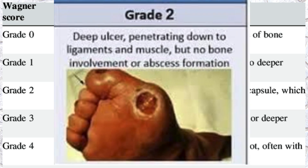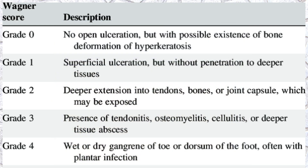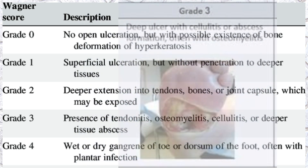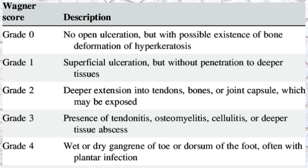Grade 2 says deeper extension into the tendons, bone, or joint capsule, which will be exposed. Grade 3 includes the presence of tendonitis, osteomyelitis, and cellulitis, along with exposure of the tendons and other deep structures.